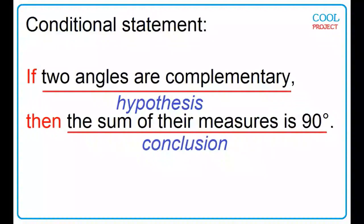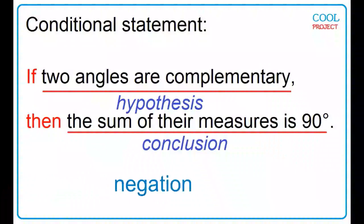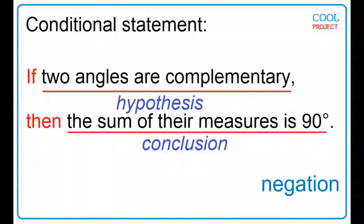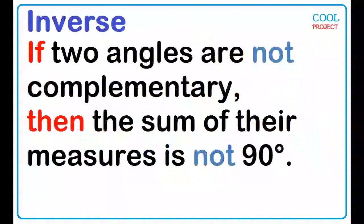To form the inverse of the conditional statement, take the negation of the hypothesis and the conclusion. If two angles are not complementary, then the sum of their measures is not 90 degrees.